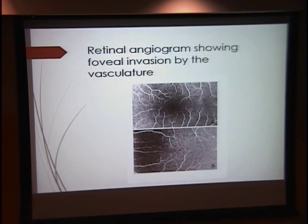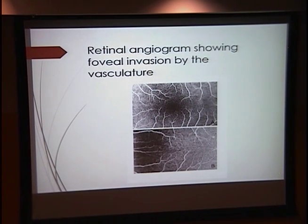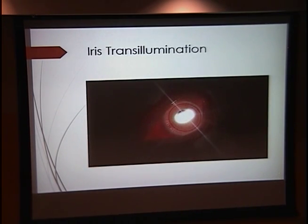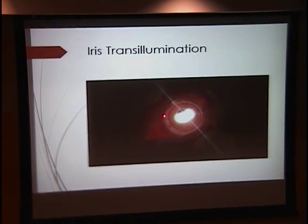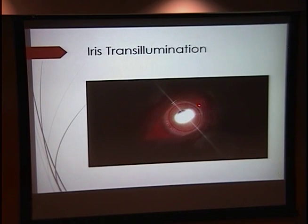Another common finding is seen on a retinal angiogram, where you get invasion of the vasculature into the foveal and macular area. There's also a transillumination technique that Josh talked about, where you can see the light red reflex coming off of the retina and shining right through the iris due to a lack of pigment. In this picture you can actually see the outline of the lens, which is pretty cool.